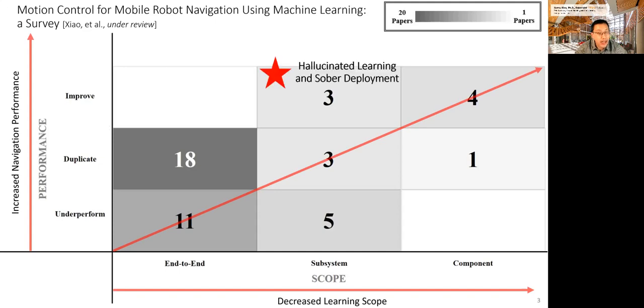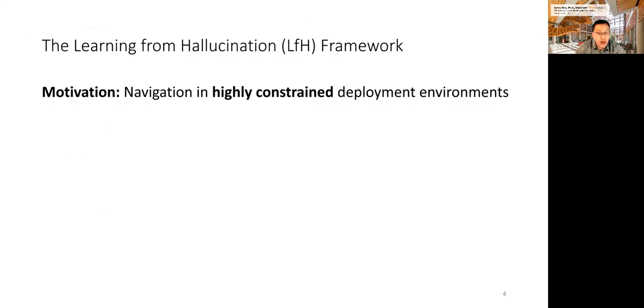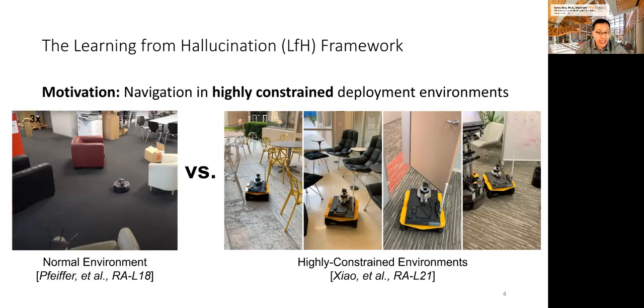This hallucinated learning and sober deployment work uses machine learning in the local planning subsystem level, and aims at largely improving classical navigation planners. The motivation for the learning from hallucination, or LFH, framework is a highly constrained environment, where the robot needs to engage in agile maneuvers to squeeze between obstacles.